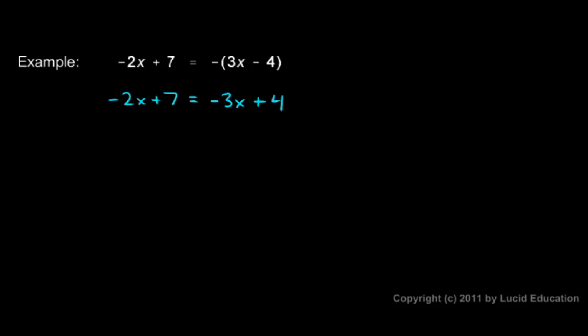You could also think of that like this. This negative sign applied to that negative 4 gives me a negative negative 4 or the opposite of negative 4 which is positive 4. Now I can solve the problem by adding 3x to each side. On the right adding 3x will cancel out the negative 3x but I also have to add 3x on the left.